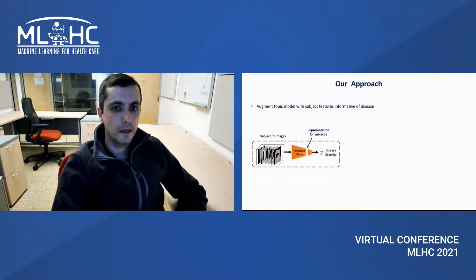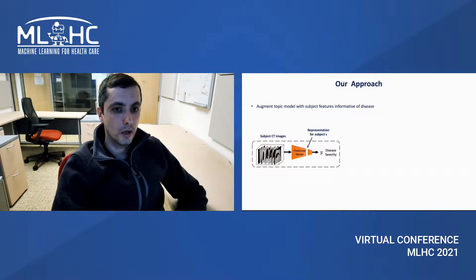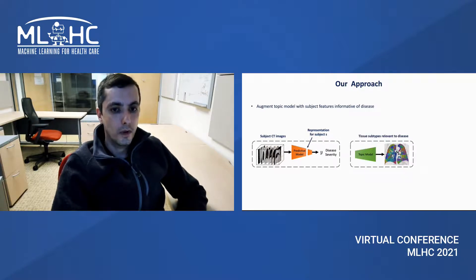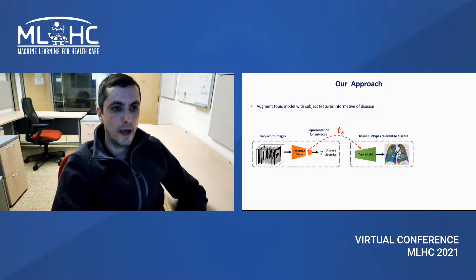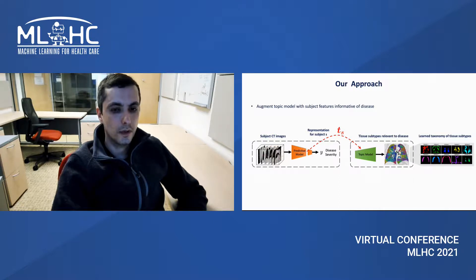Our work tries to remedy this by combining the best of two worlds. The first component is a discriminative model using training and supervision to predict the severity of disease from CT images, learning a representation of lung appearance that relates a subject's lung to the rest of the population and is directly predictive of disease severity. The second component is a probabilistic topic model that learns different visual subtypes and is readily interpretable. The key insight is to provide the topic model with disease-relevant covariates from the predictive model, here denoted as TS, to inform the learning of a disease-specific taxonomy of tissue subtypes.